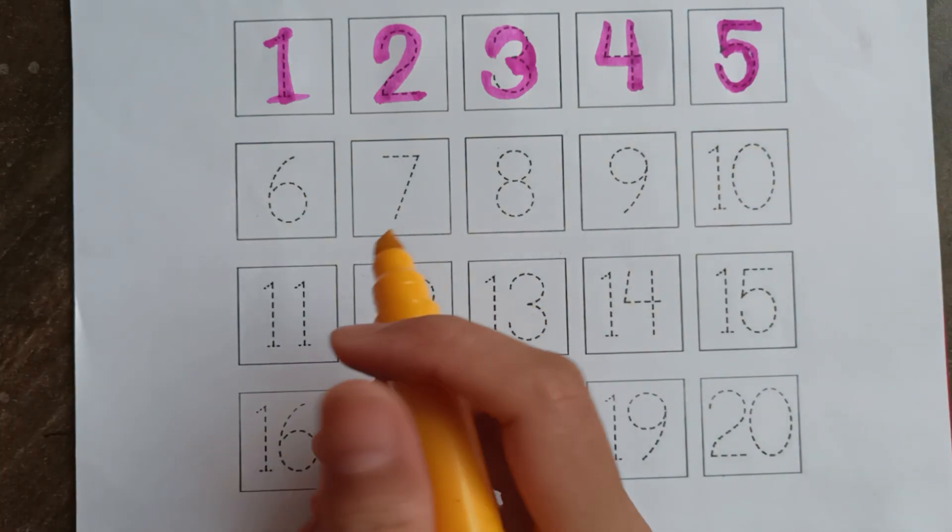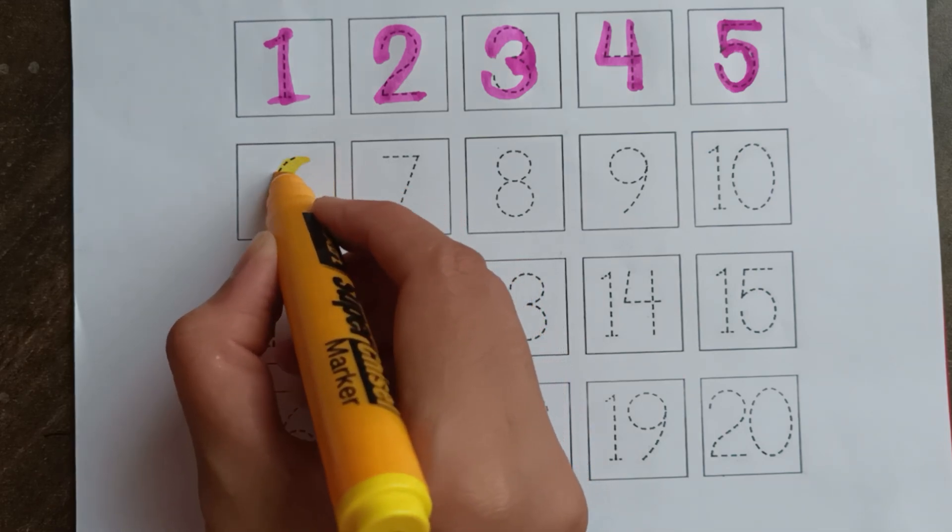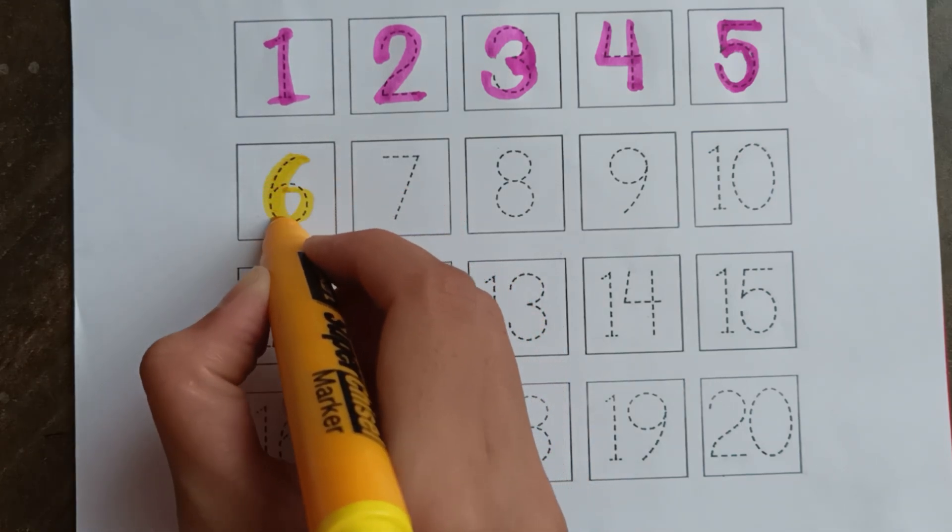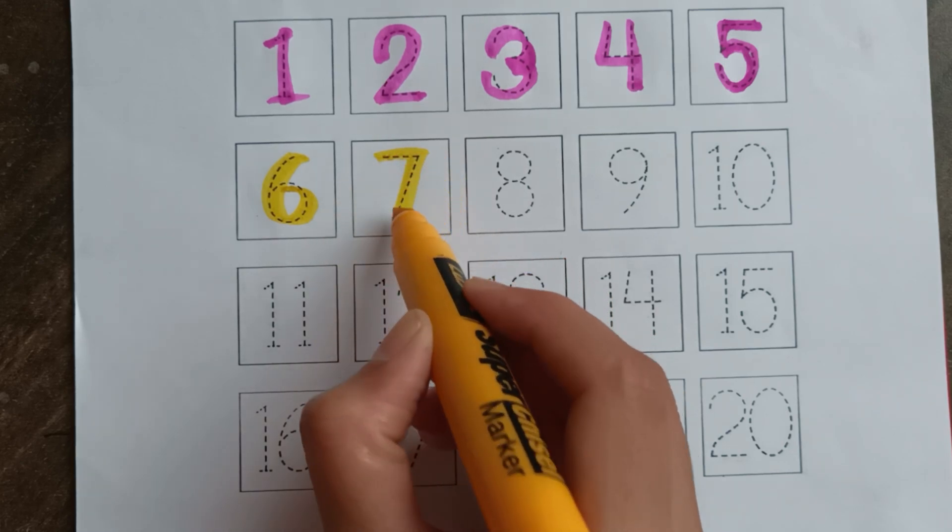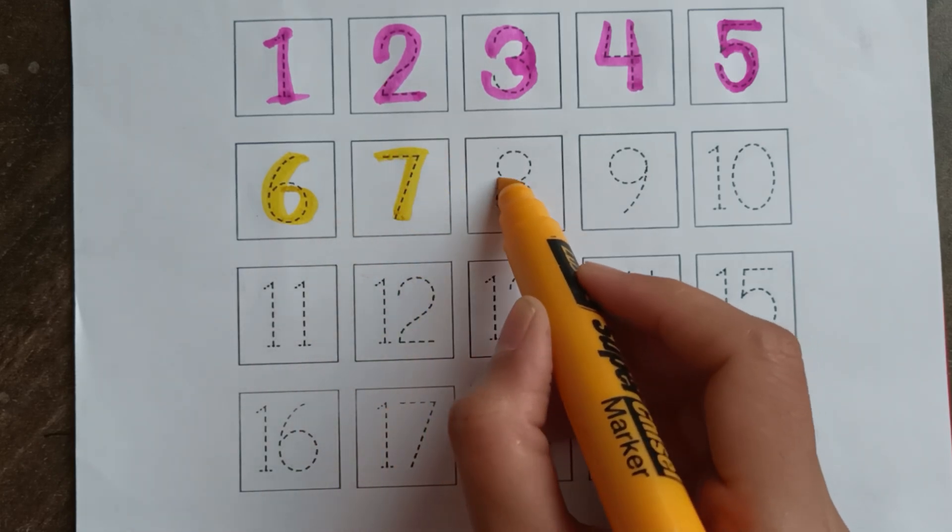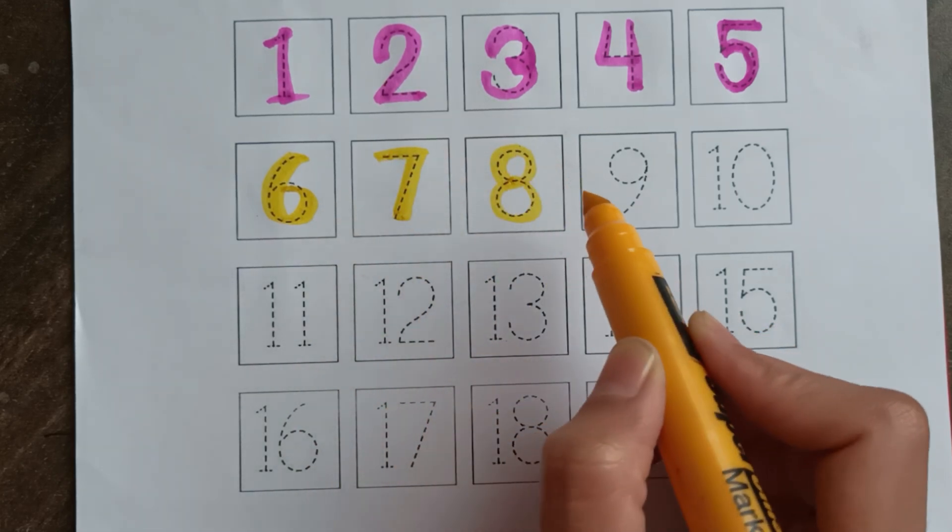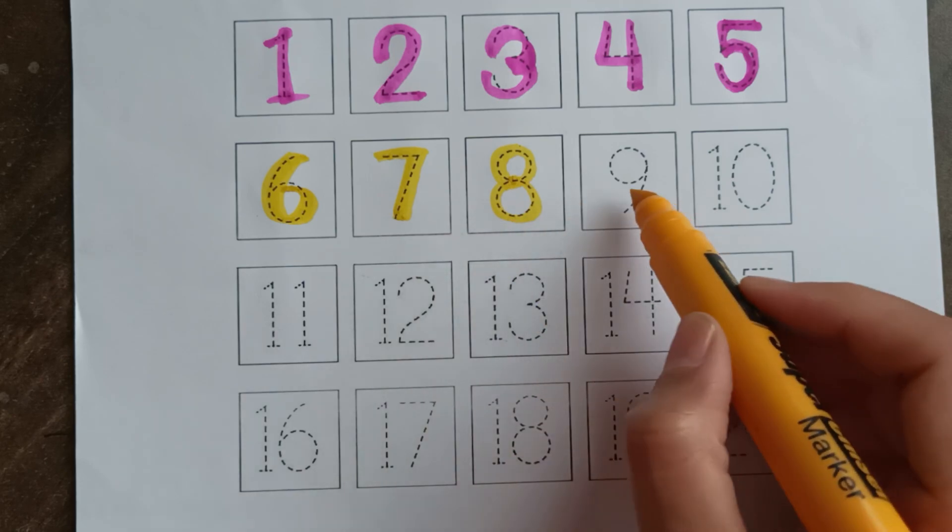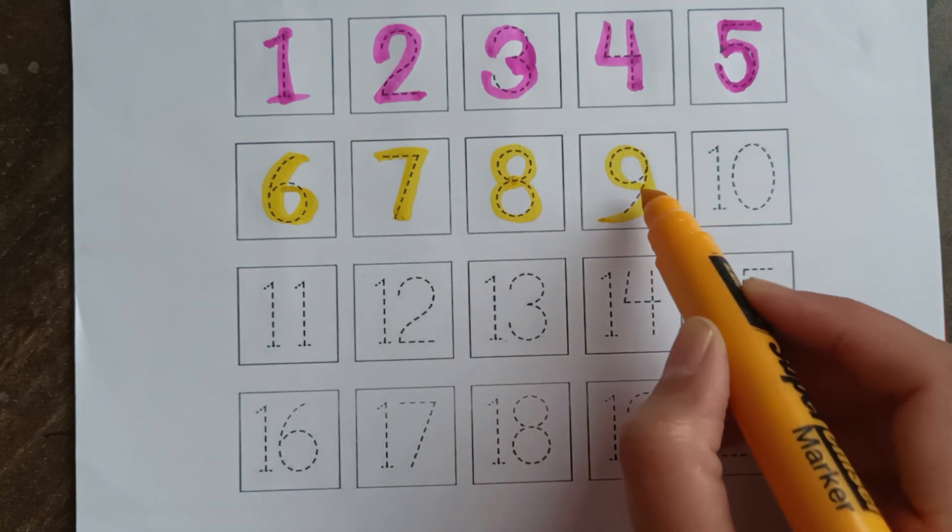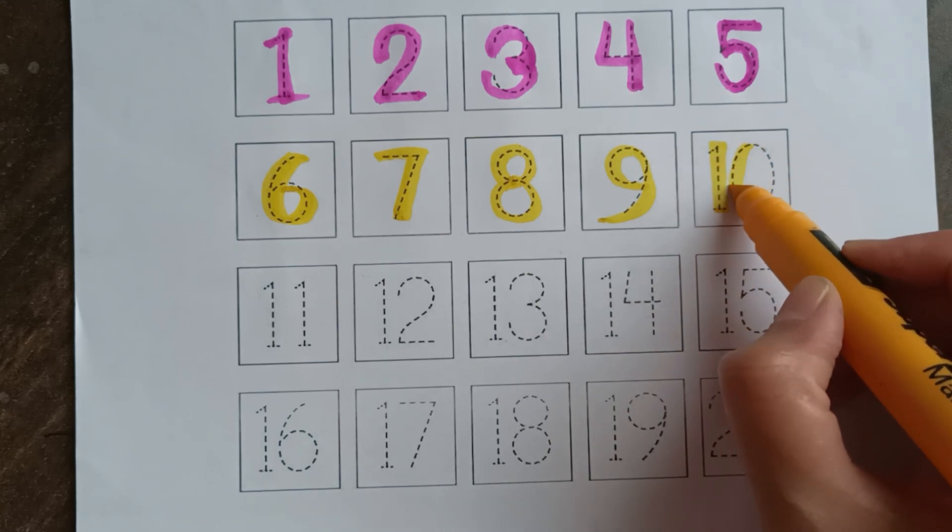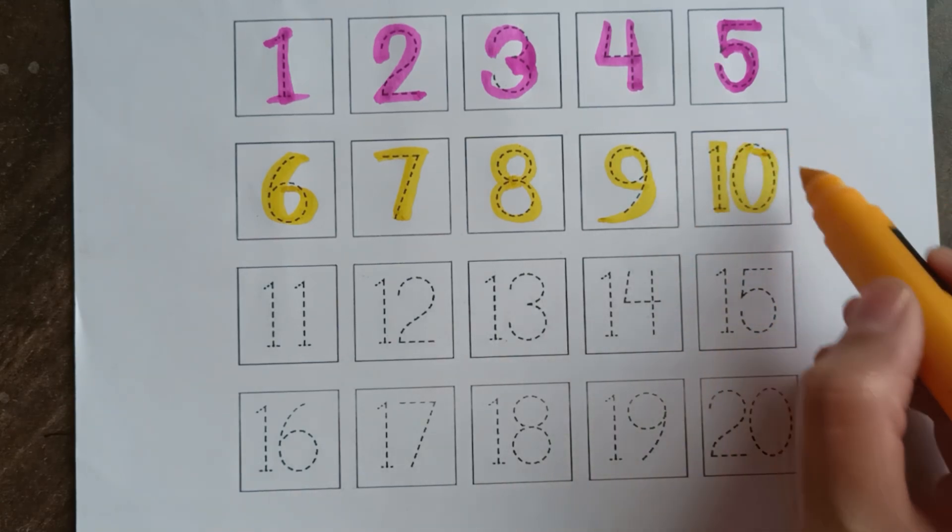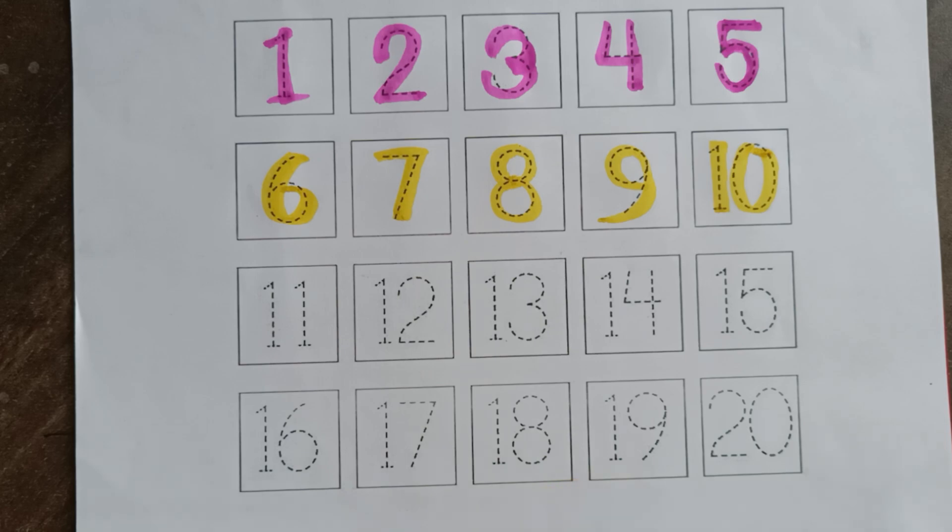Yellow color. Six, seven, eight, nine, ten. One, zero, ten.